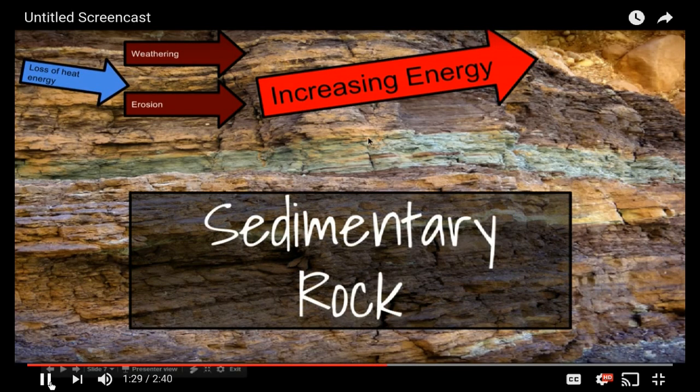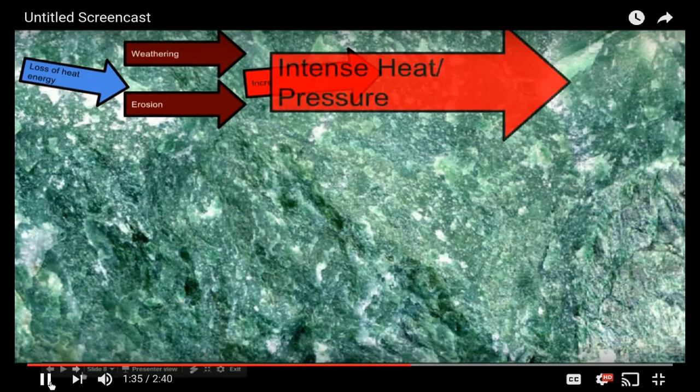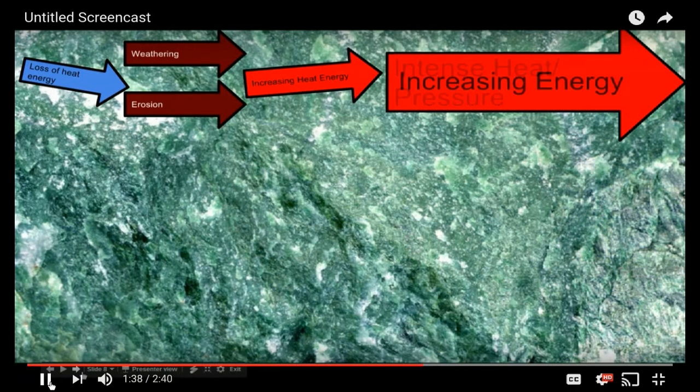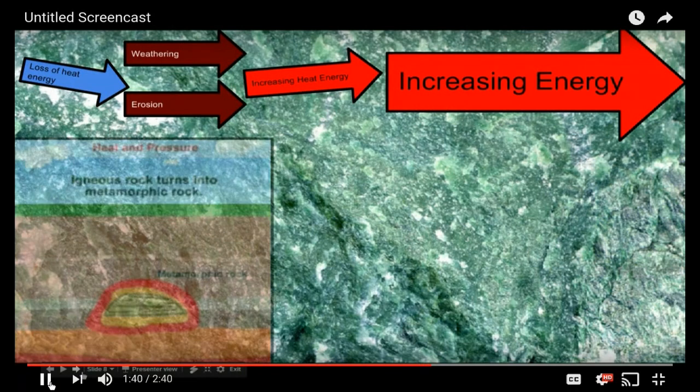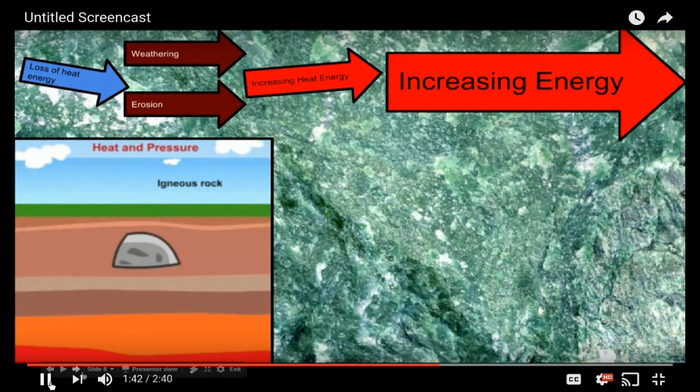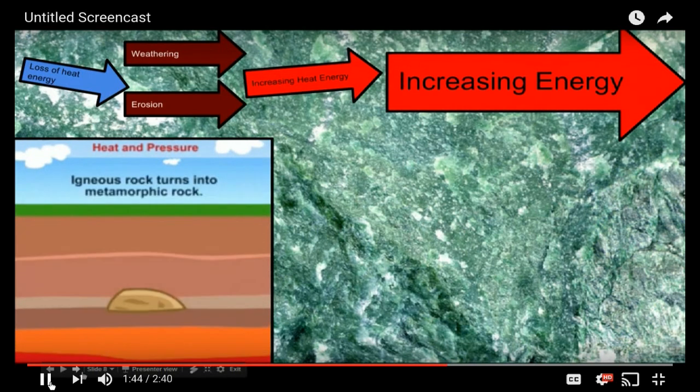As you can see here, there's layers and layers and layers of it that have all been pressed together until they form a rock. If we continue to add more intense heat and pressure and increase in energy, we can form a different kind of rock again. This is when any kind of stone will chemically change.